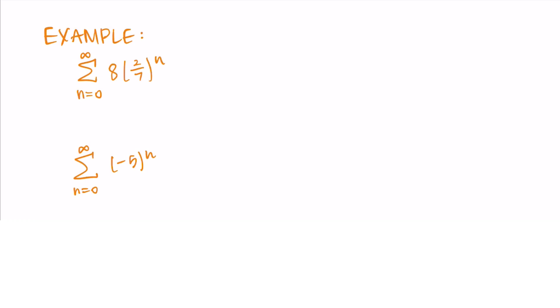For the first series, a is 8 and r is 2/7. Then we can talk about whether this series converges or diverges. We always want to look and see if the r value is between negative 1 and 1 because if the absolute value is less than 1, meaning it's between negative 1 and 1, then we have convergence. So 2/7 fits in this interval, and this means that the series converges.